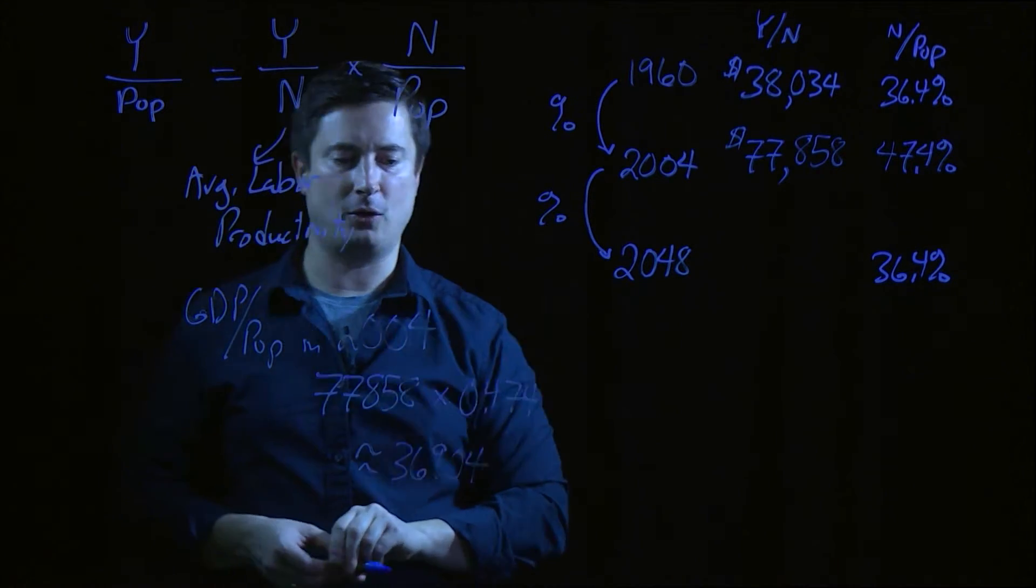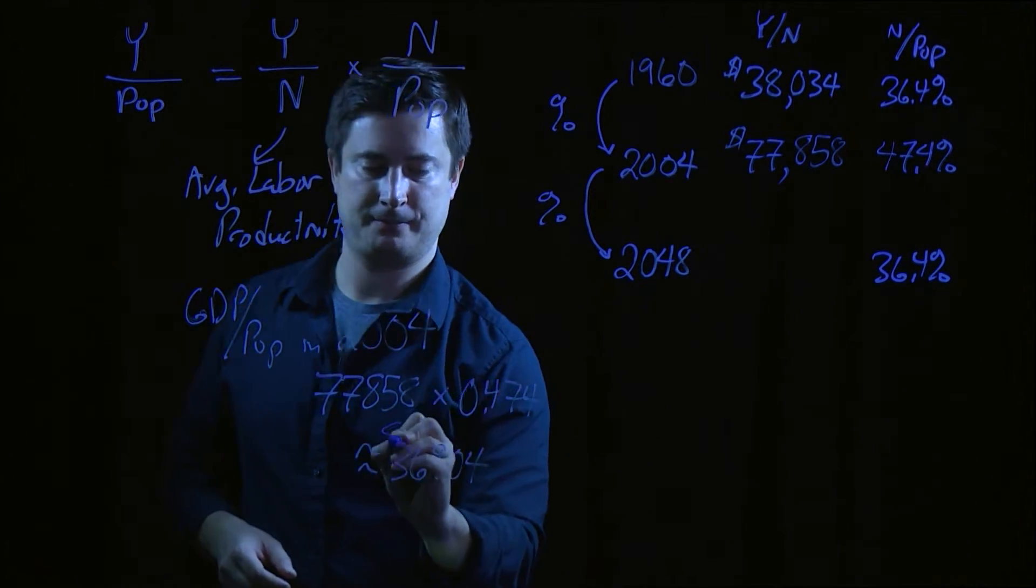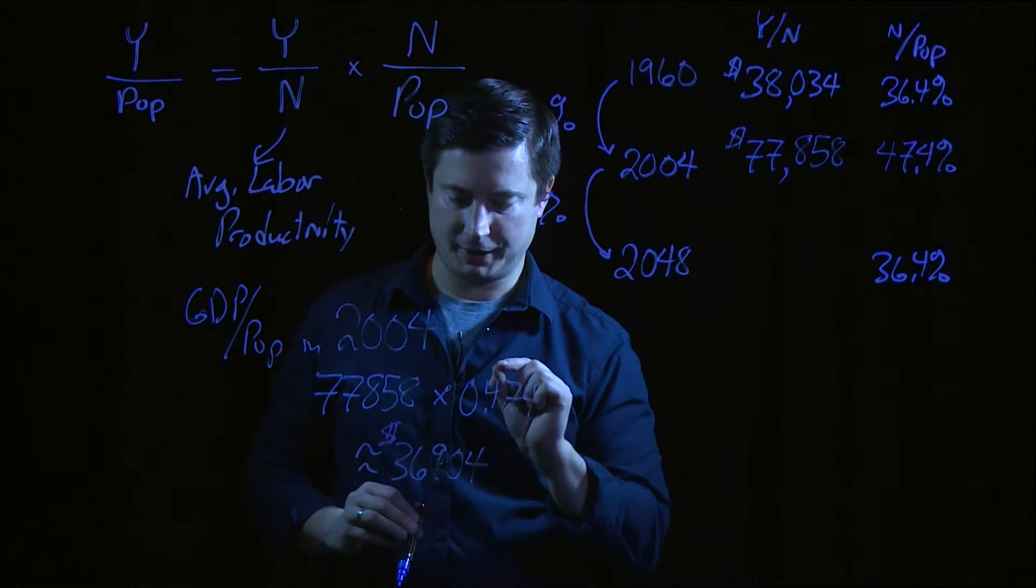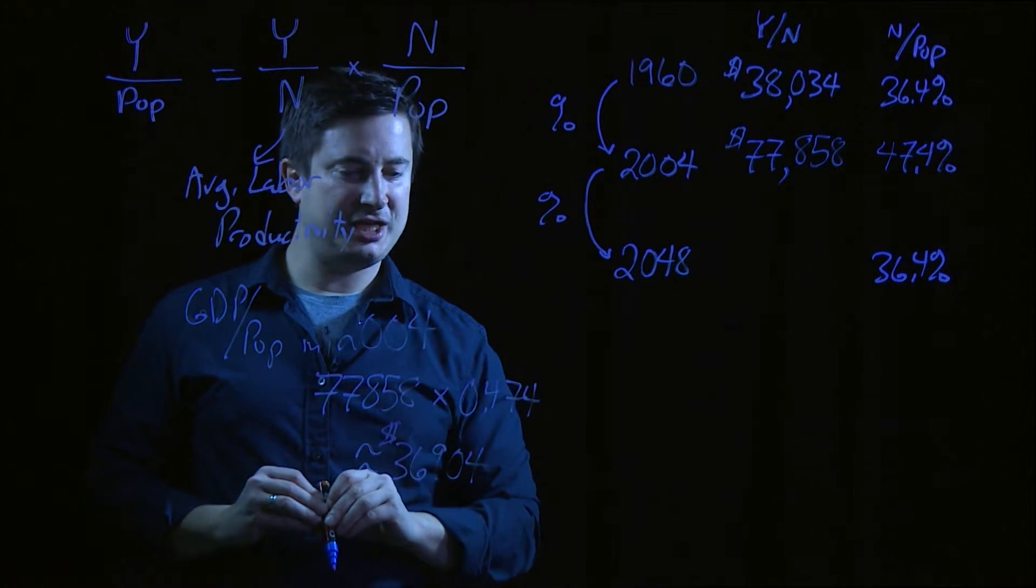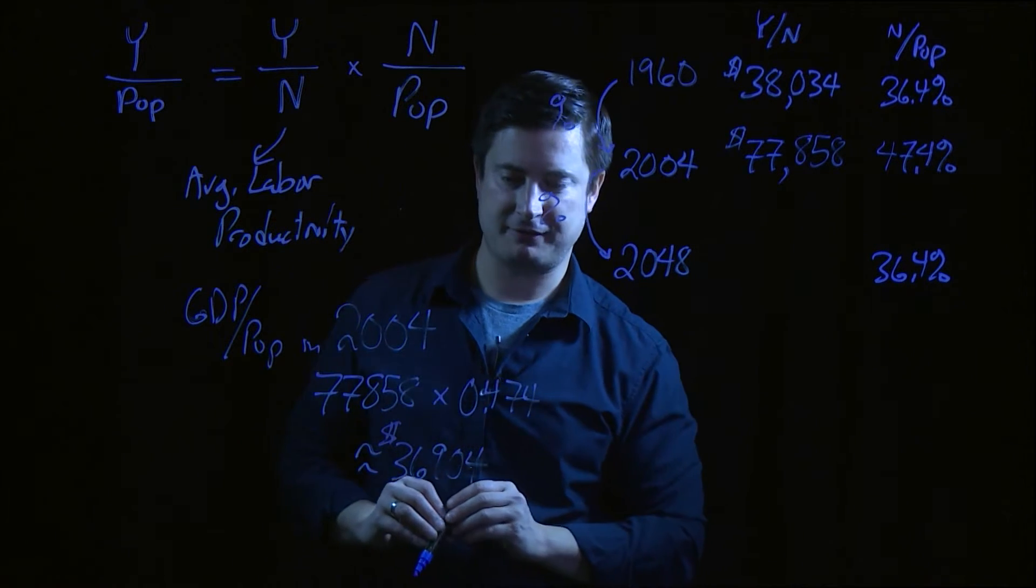In 2004, GDP per capita was approximately $37,000. So that gives us one number. So what is GDP in 2048?